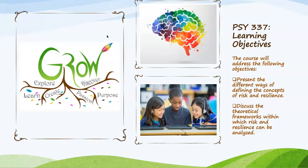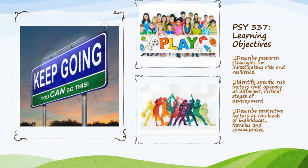Additional objectives include identifying specific factors at the levels of individuals, families, and groups, discussing variations in resilience across different cultural and gender groups, discussing correlates of resilience, and describing intervention strategies for individuals and social programs that enhance resilience.